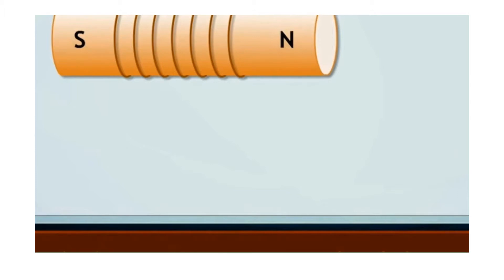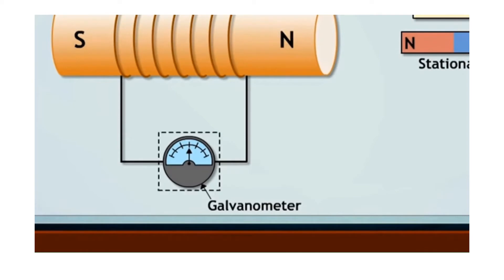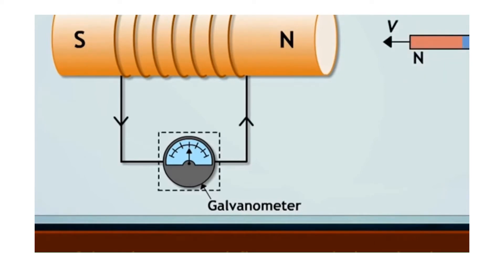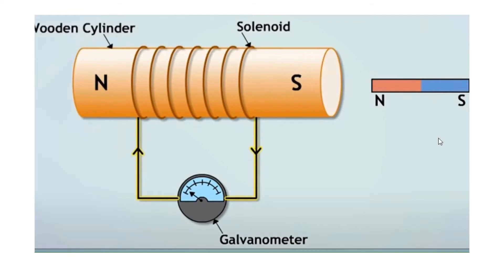Michael Faraday connected a coil of a conductor to a galvanometer. A galvanometer is a device that can sense the slightest generation of electric current in the coil. When a magnet was placed stationary near this coil, there was no deflection in the galvanometer. But when the magnet was taken towards it, the galvanometer showed one direction deflection. And when the magnet was receded or taken in the opposite direction, the galvanometer showed the reverse direction deflection.